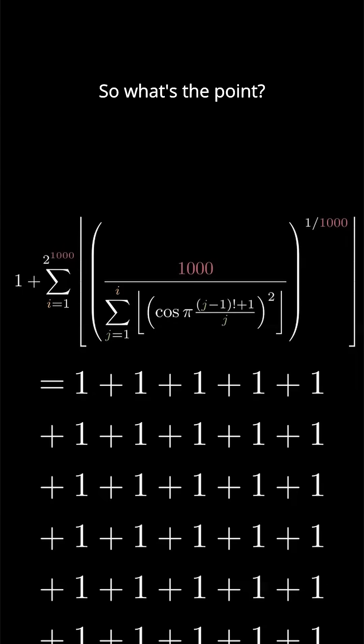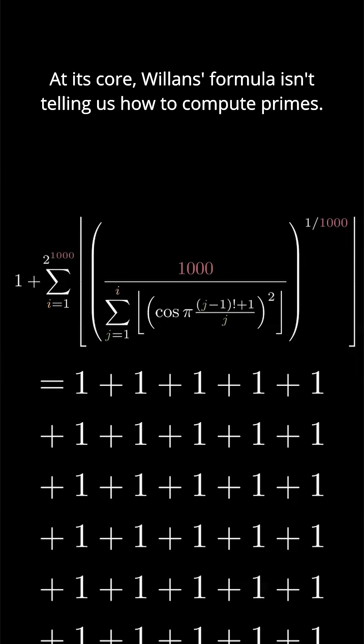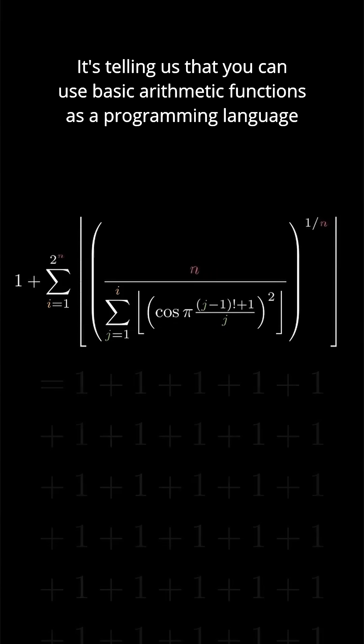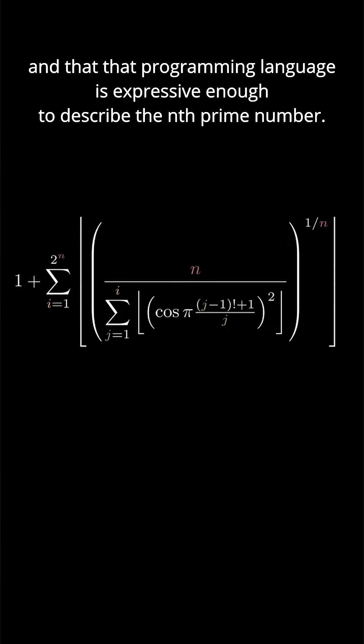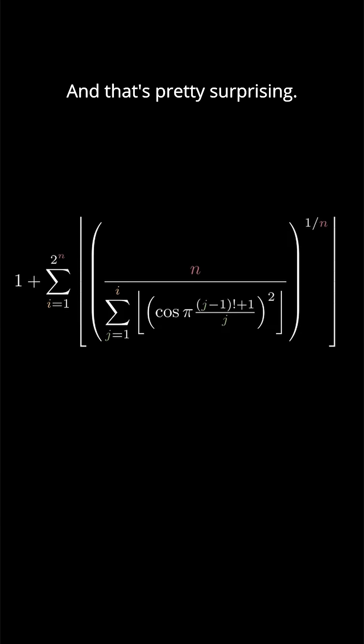So what's the point? At its core, Willans formula isn't telling us how to compute primes. It's telling us that you can use basic arithmetic functions as a programming language, and that that programming language is expressive enough to describe the nth prime number. And that's pretty surprising.